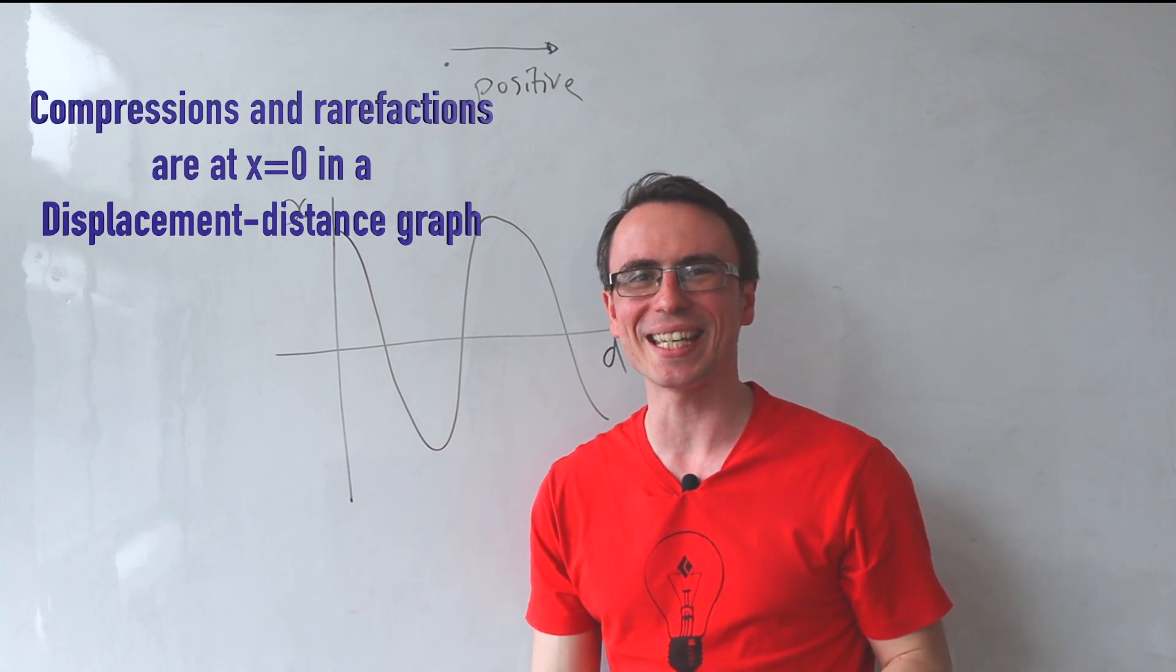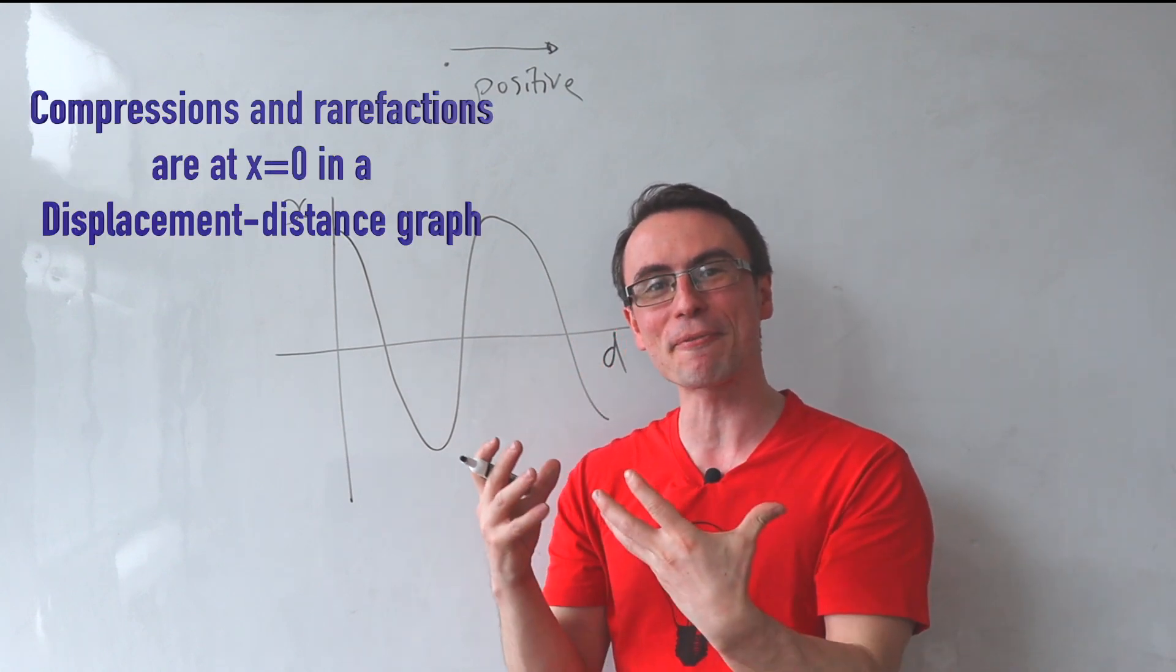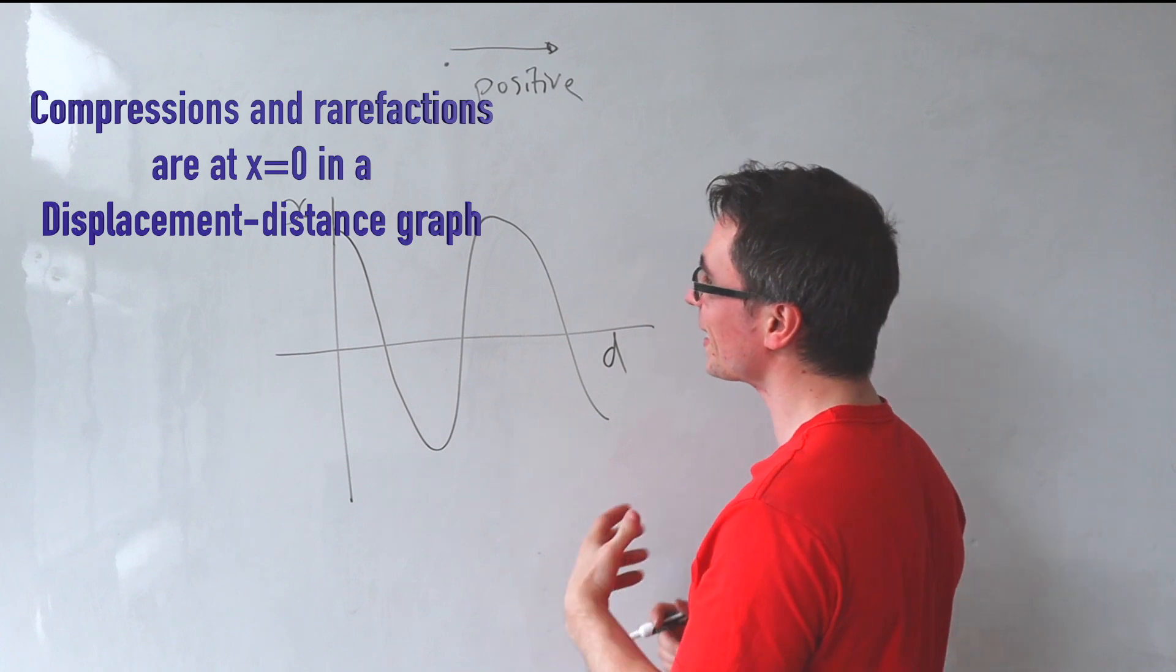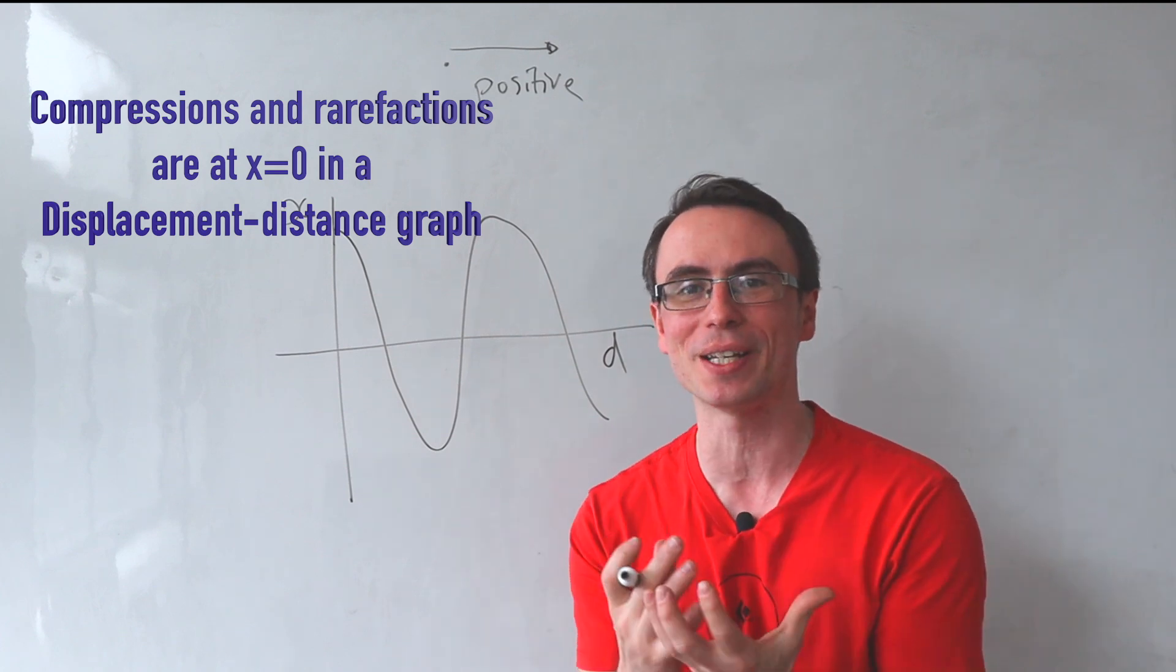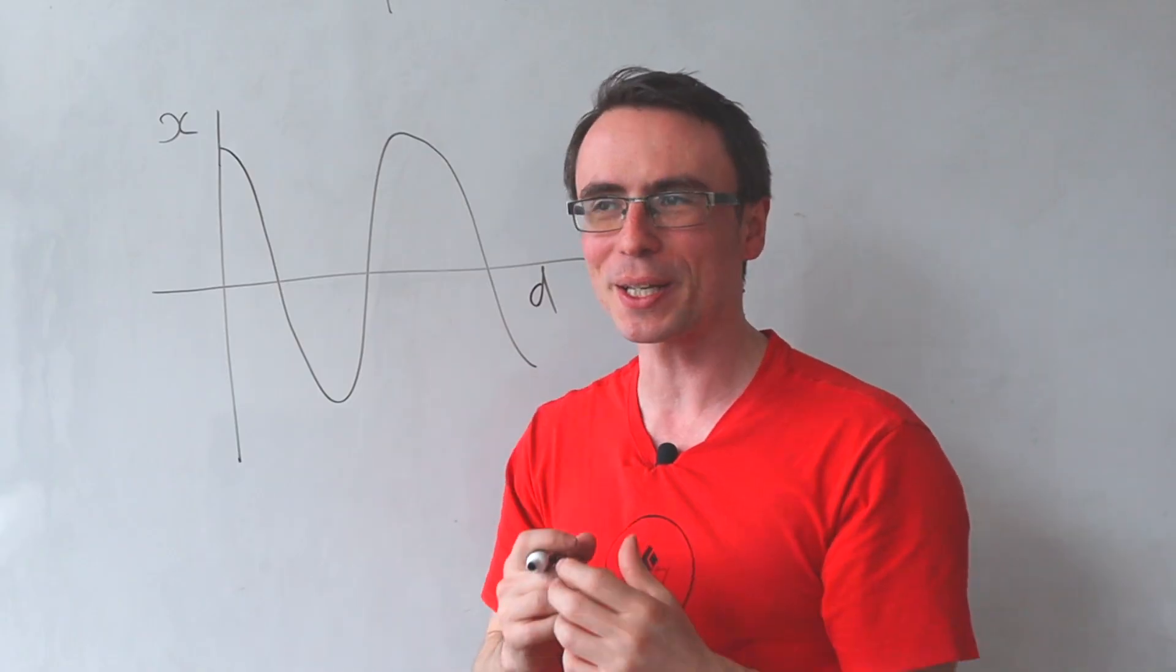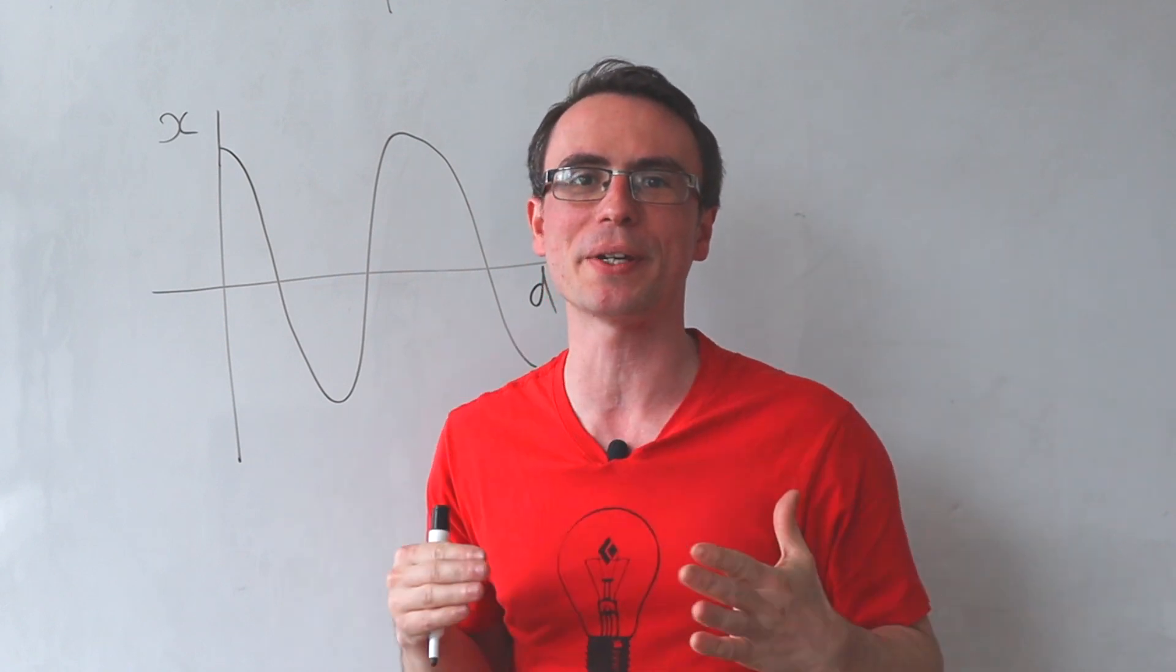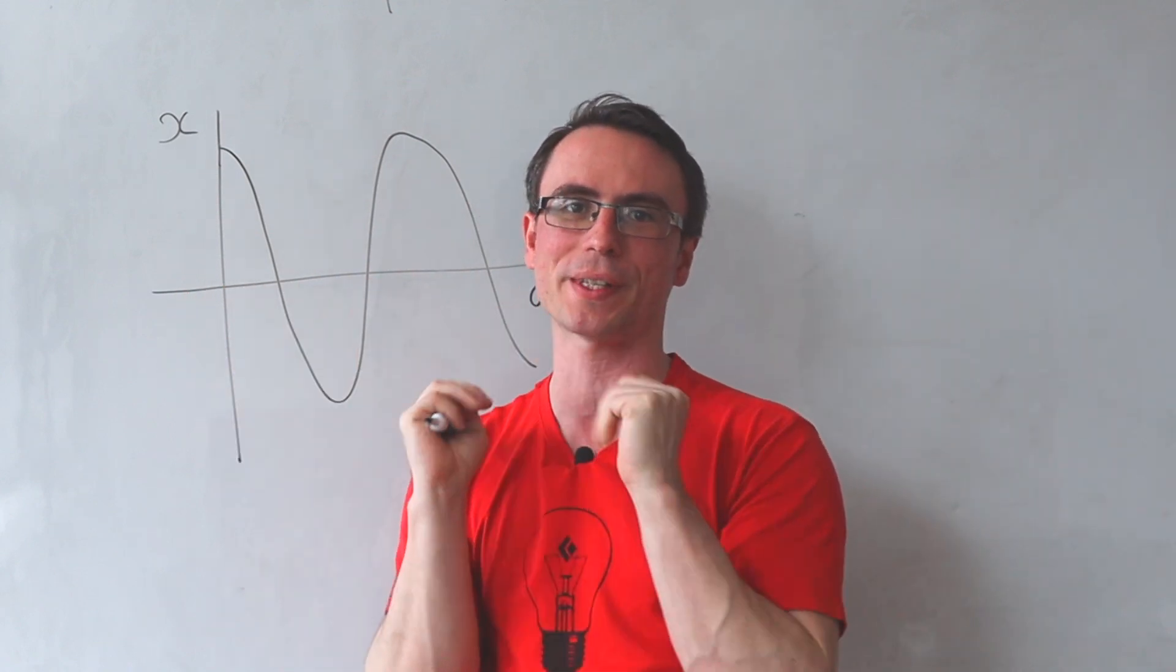Rule number one in determining these, the compressions and rarefactions will always have a displacement of zero. This is because if it's a compression, it will appear as if all the points are moving towards that point.